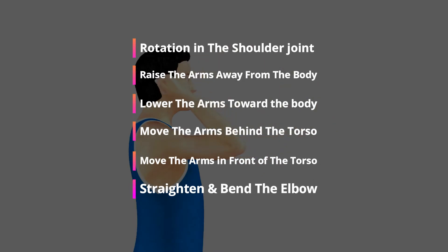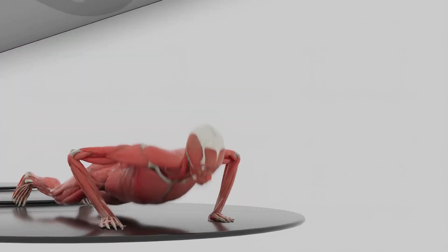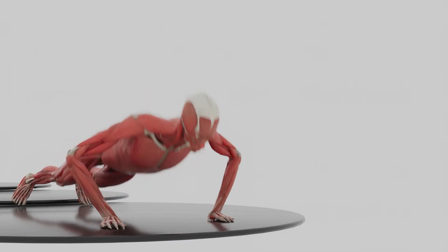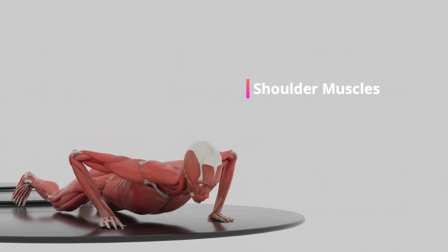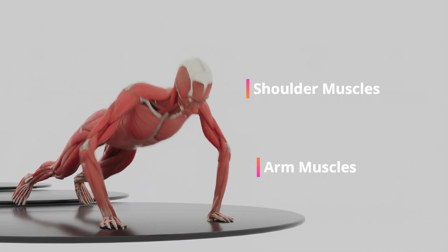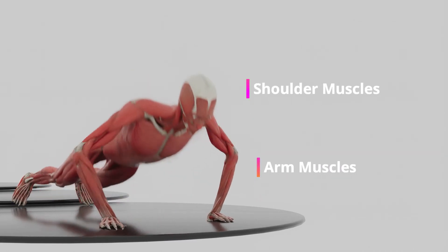In addition to being important in various arm movements, the humerus is also important for support, with its parts serving as a point of contact for the shoulder and arm muscles.